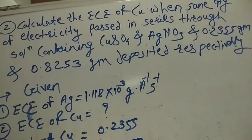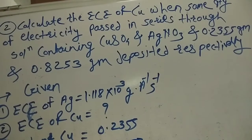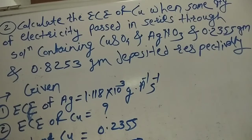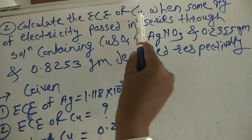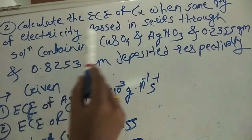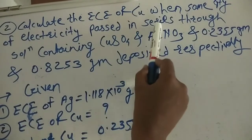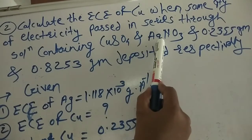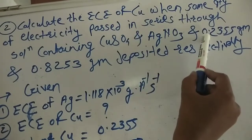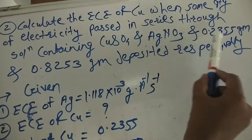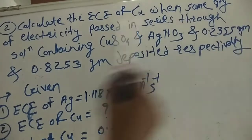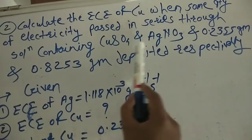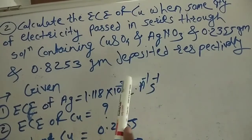Let us begin with the second problem. Calculate the electrochemical equivalence of copper when the same quantity of electricity is passed in series through solutions containing copper sulfate and silver nitrate. The masses deposited are 0.2355 gram of copper and 0.8253 gram of silver on their respective electrodes.